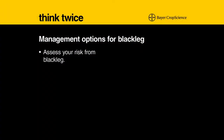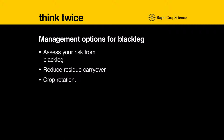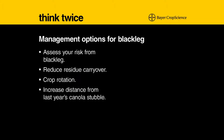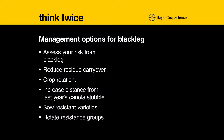All these factors contribute to the seriousness of this disease. The first step is to assess your risk from blackleg — this is really important. If you want to manage your disease effectively, you have to look at what sort of risk you have. Reduce residue carryover and use crop rotation to avoid sowing in close proximity to the previous year's residues. Also choose varieties which are very resistant to blackleg, and rotate these resistance groups.